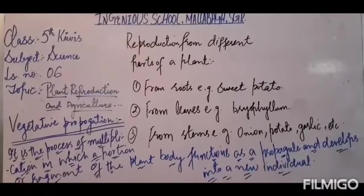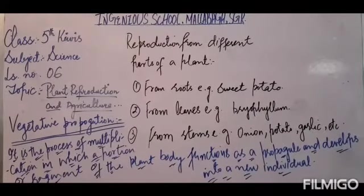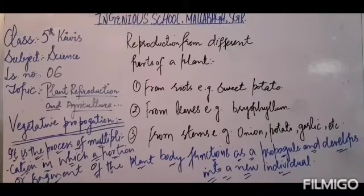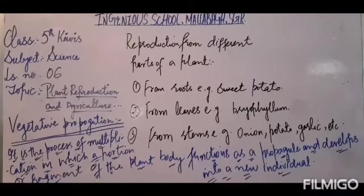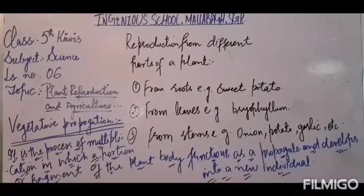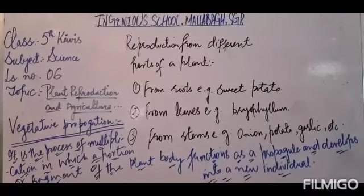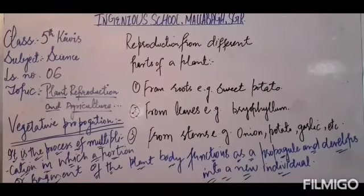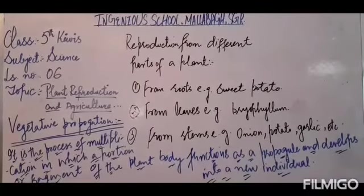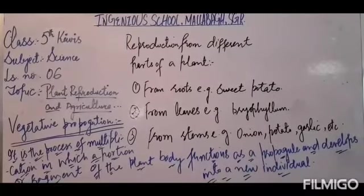So my dear kids, that was all about vegetative propagation, also called vegetative reproduction. I hope you have understood it well. Today we learned how reproduction occurs from different parts of the plant. Inshallah, our next topic will be about crops and agriculture.